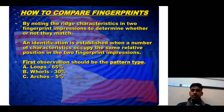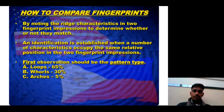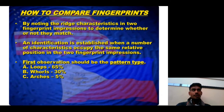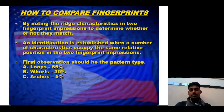The most common fingerprint pattern is the loop, found in 65% of individuals. The second most common pattern is the whorl, comprising 30%. The third pattern is the arch, which comprises approximately 5% of the population.